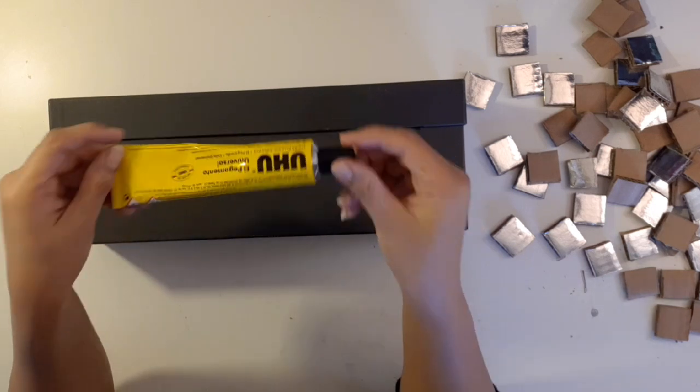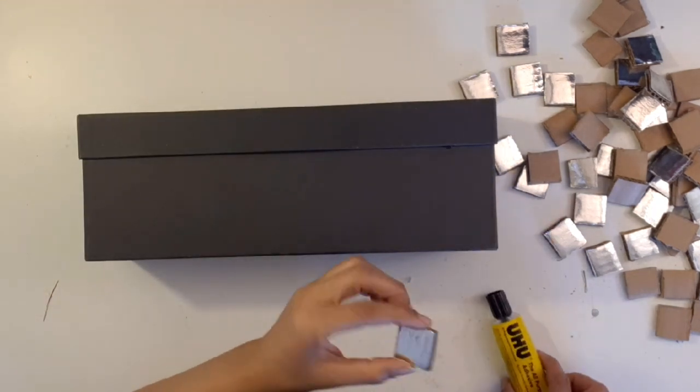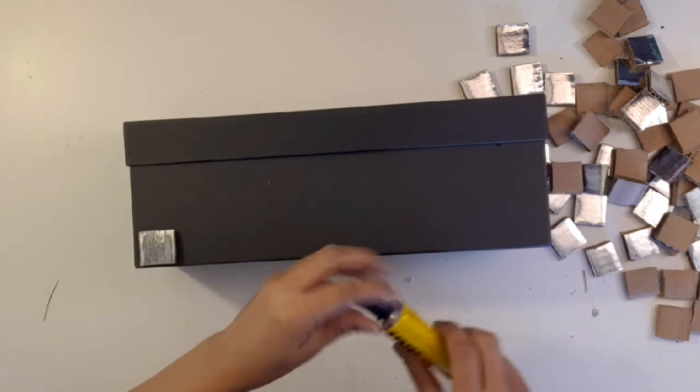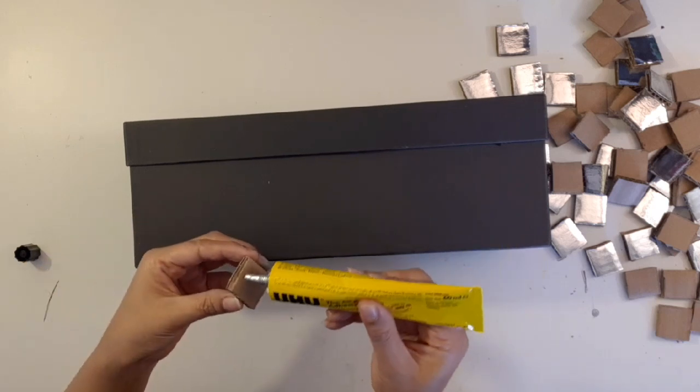Here today I will use this glue to stick all these square pieces onto this box. You need to cover all the sides of this box, and then if the edge is left, you can cut these pieces into small pieces to cover the edges as well.